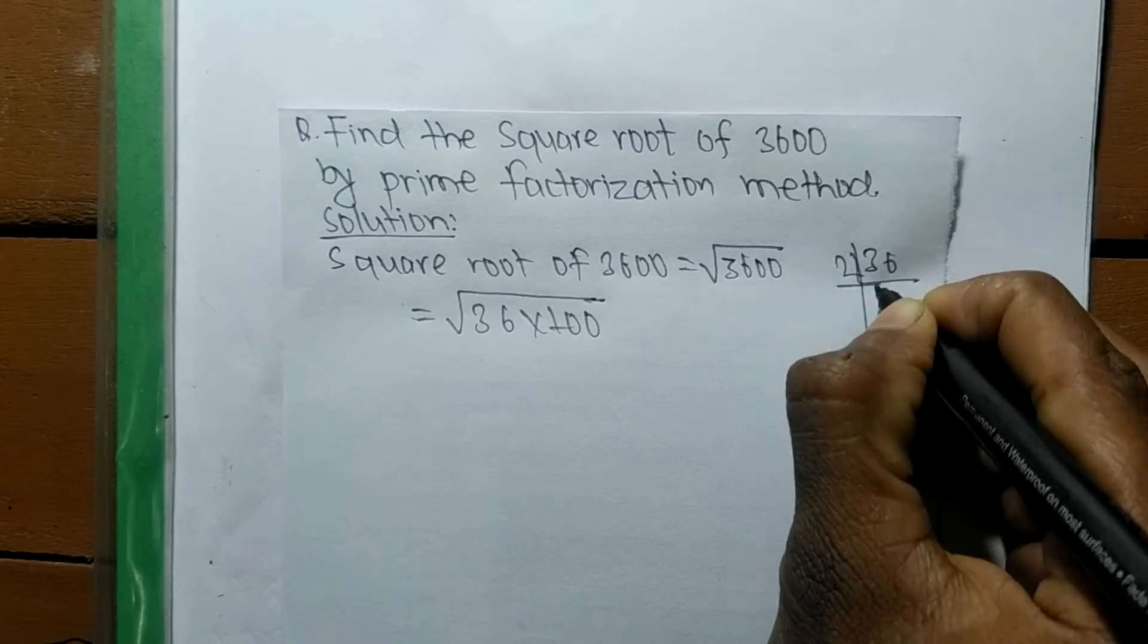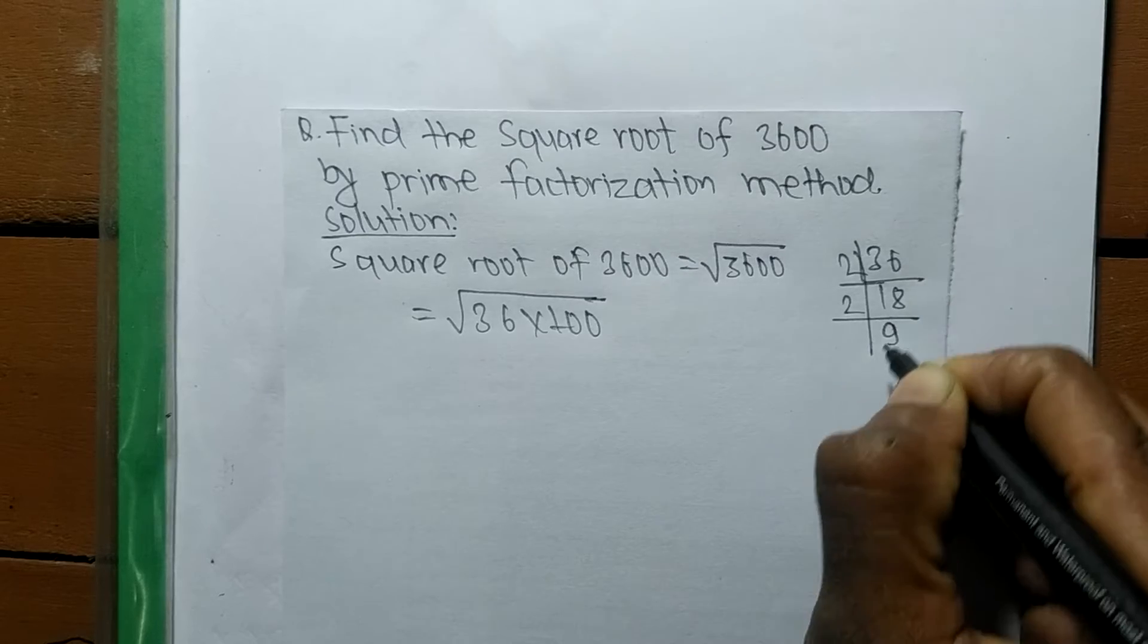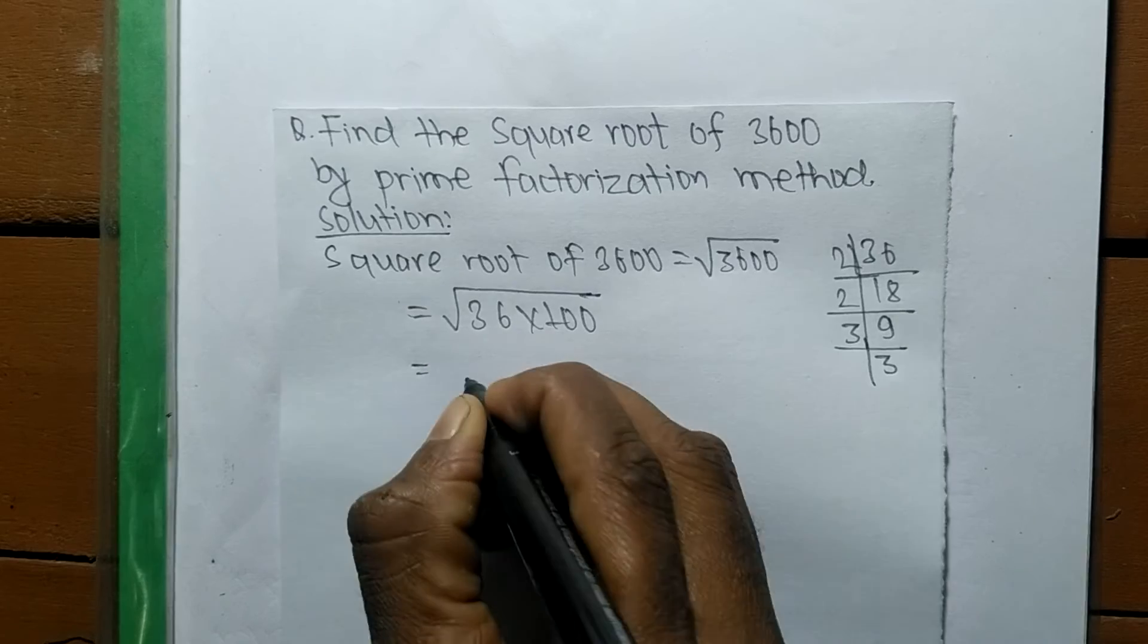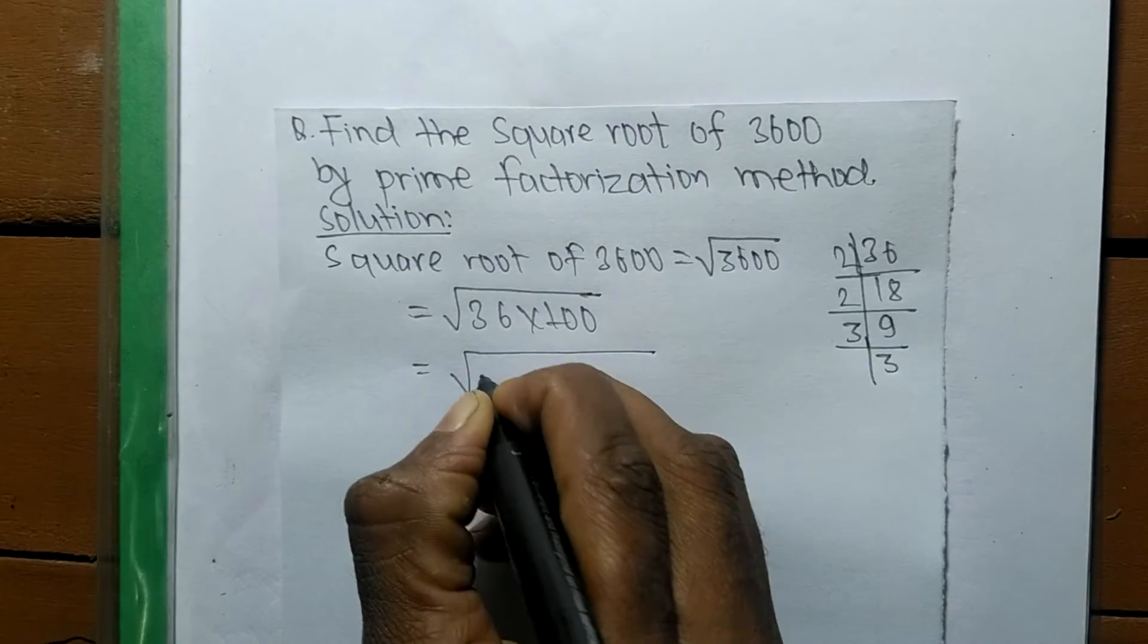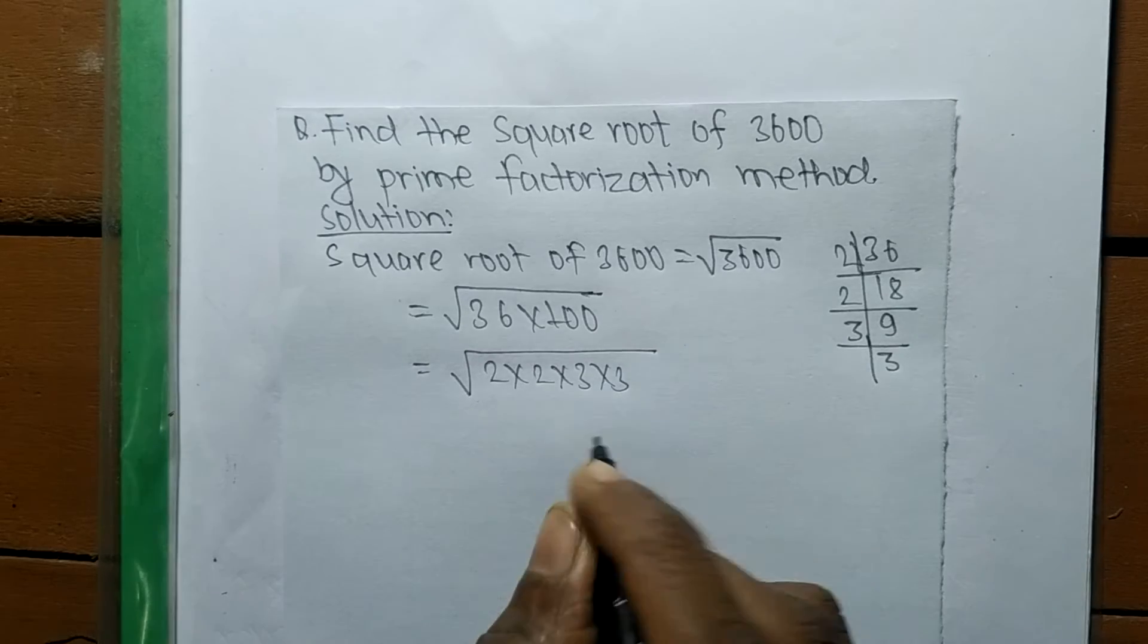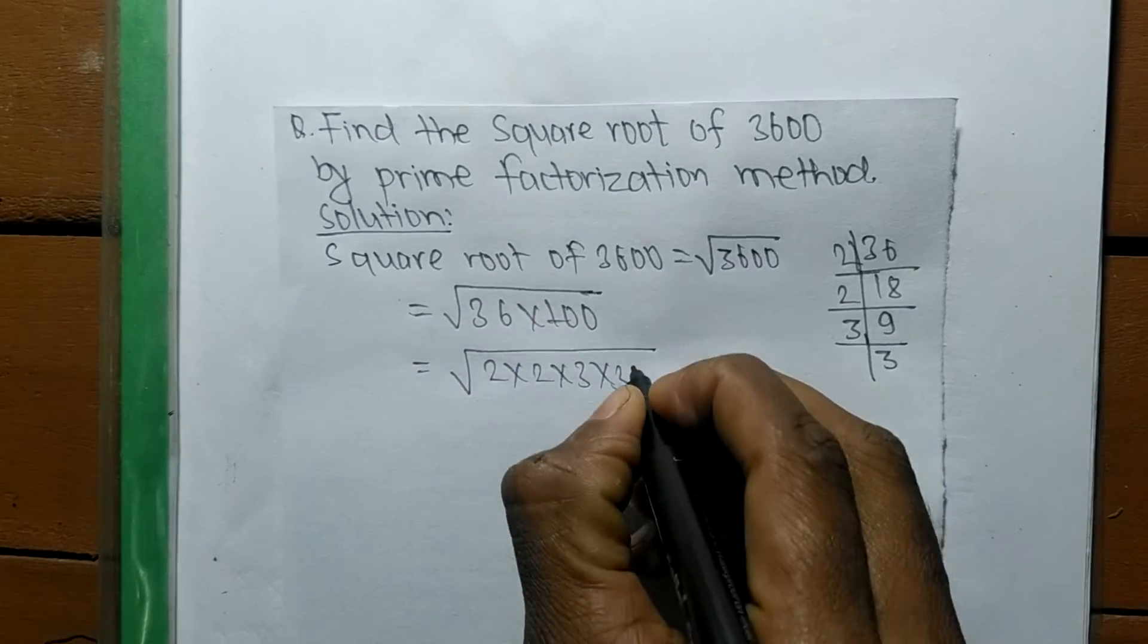So it is 2 times 18, 2 times 9, and 3 times 3 means 9. So it is equal to 2 into 2 and 3 into 3. These are the prime factors of 36.